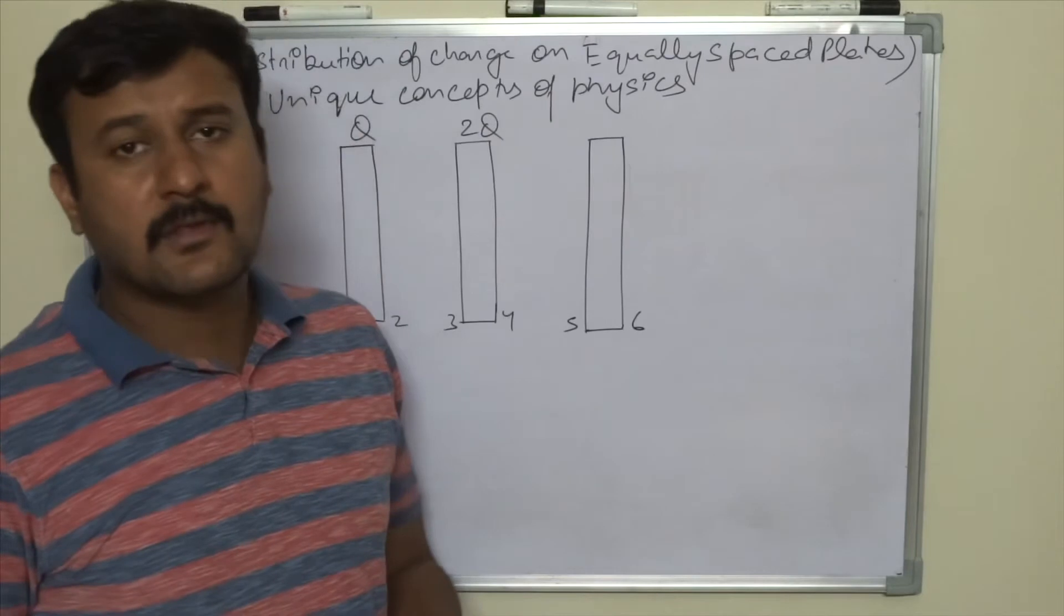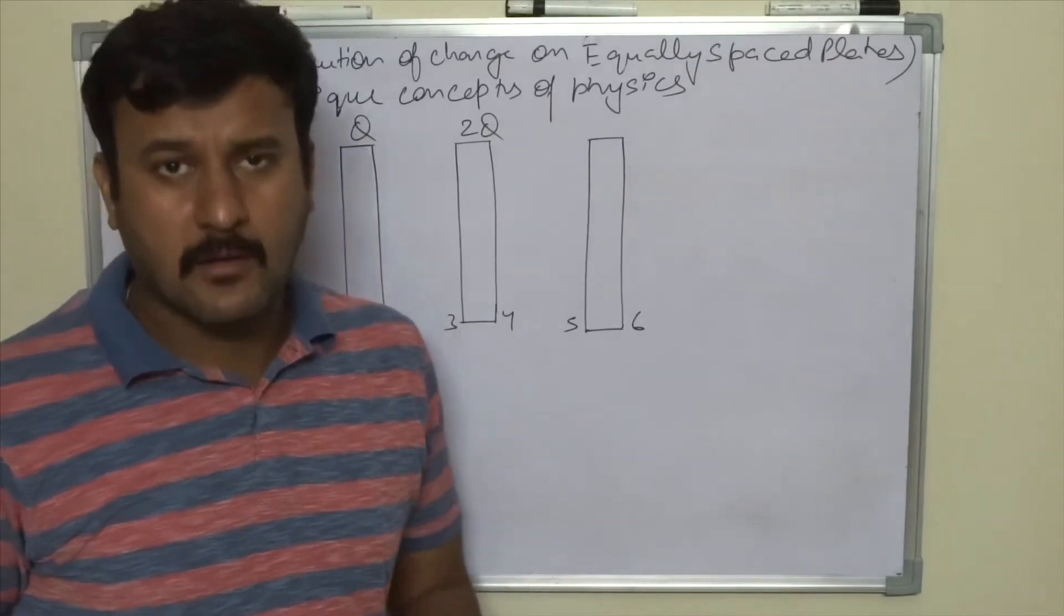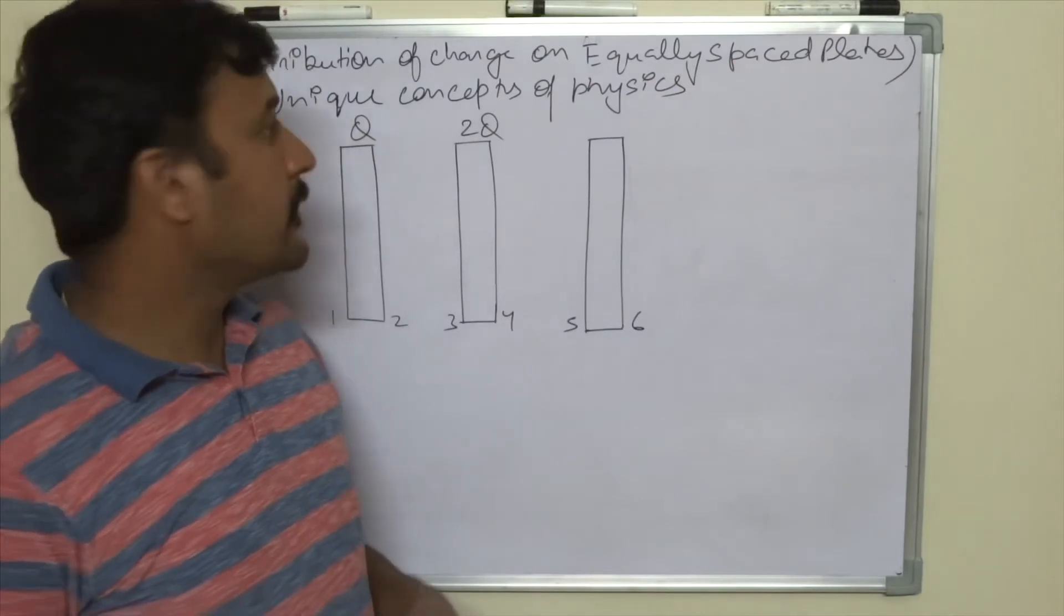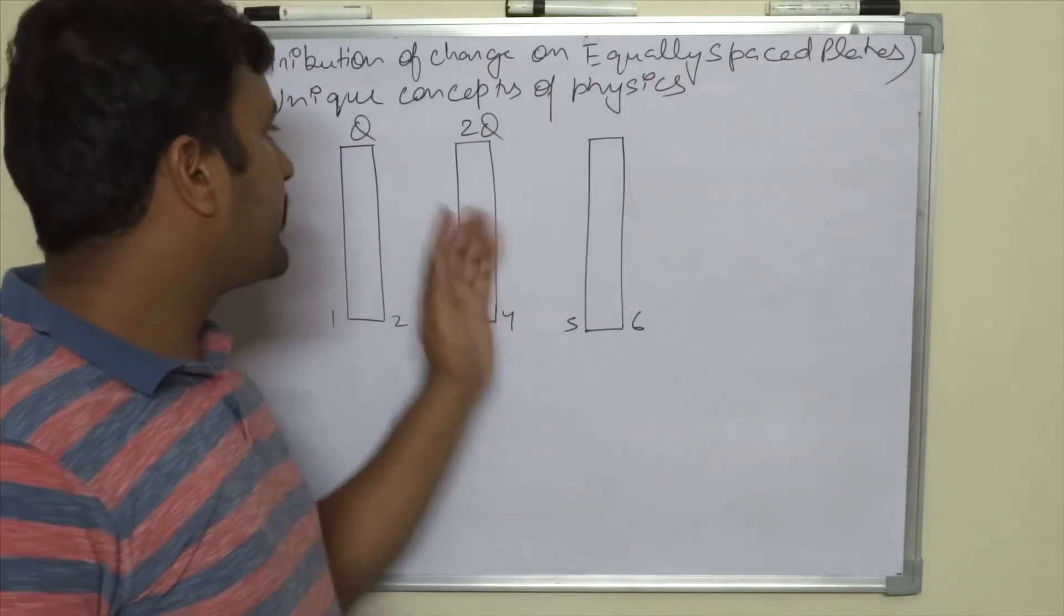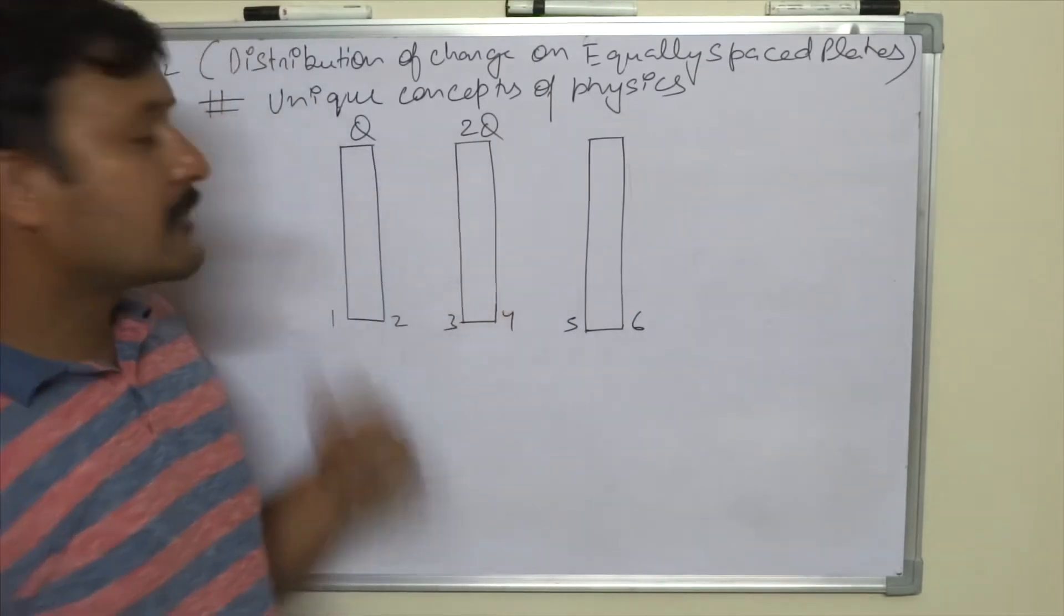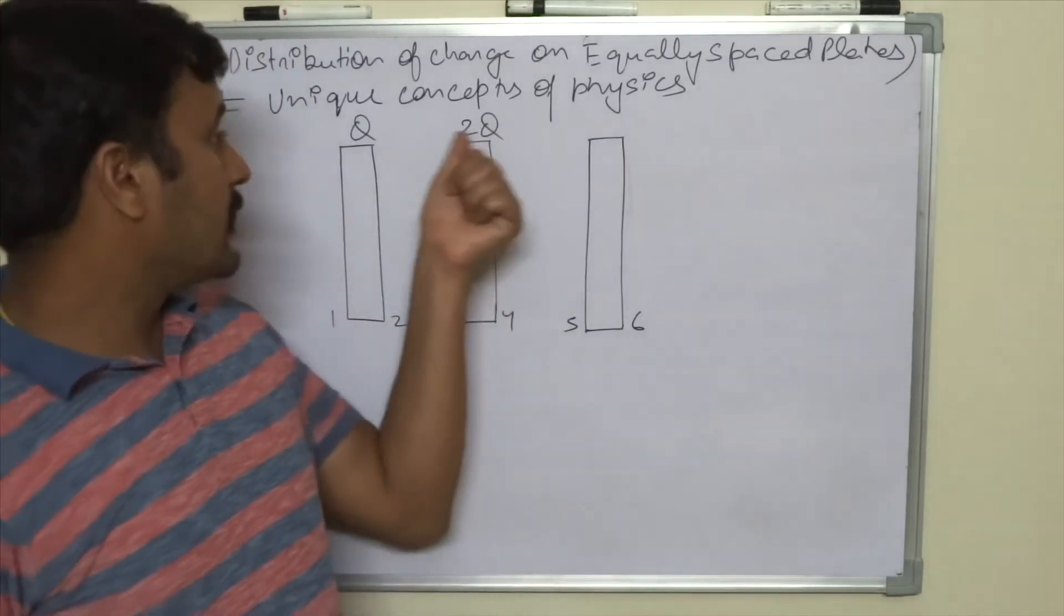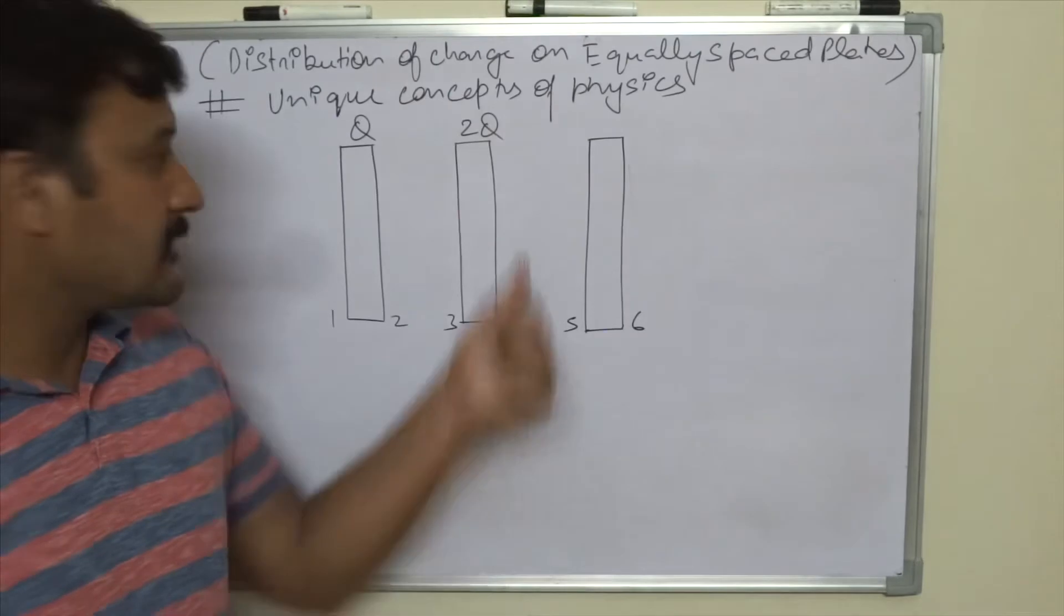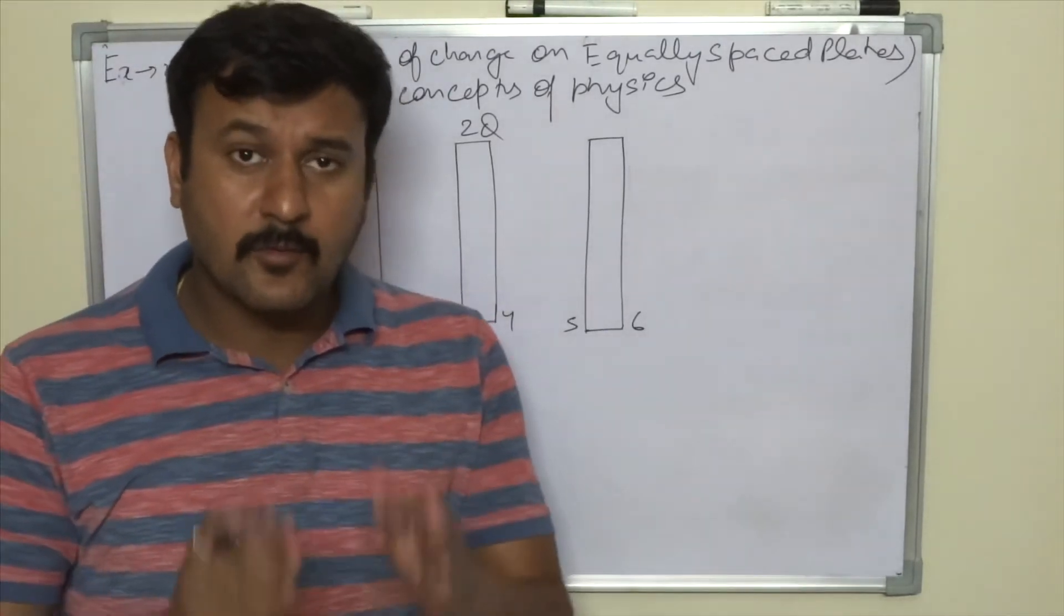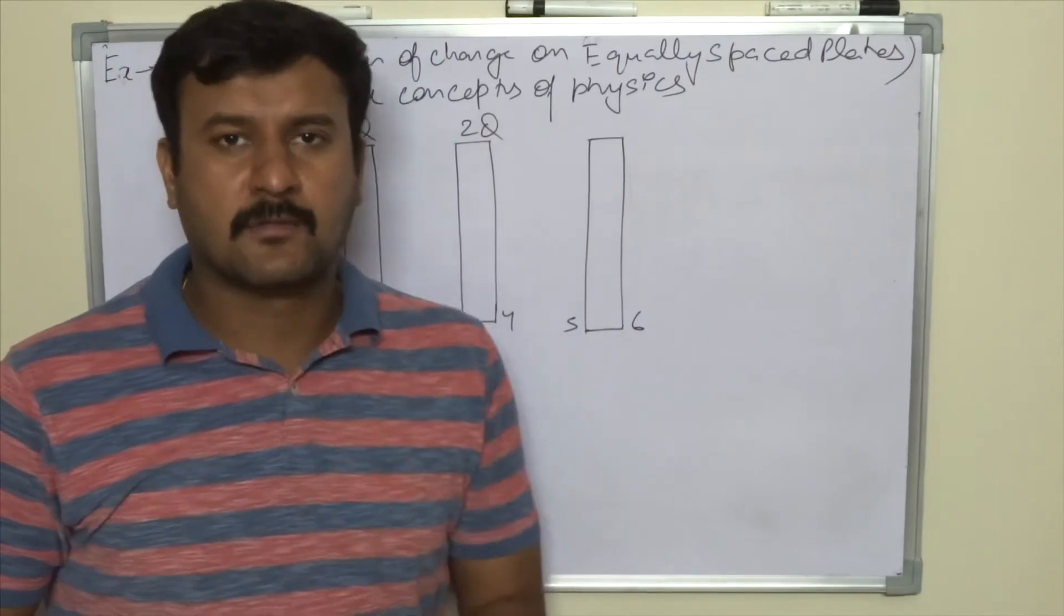Now we will solve this example by a trick. If you remember the trick I told you, you have to sum up the charges of the system. So on the system the total charge is 3Q. You can see this one is neutral, so you have to divide that total charge only in two parts.